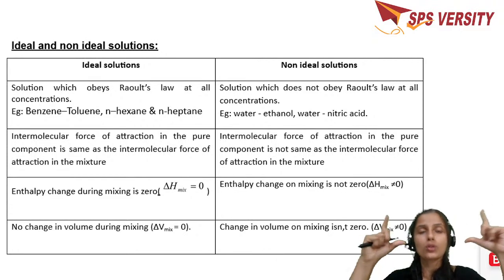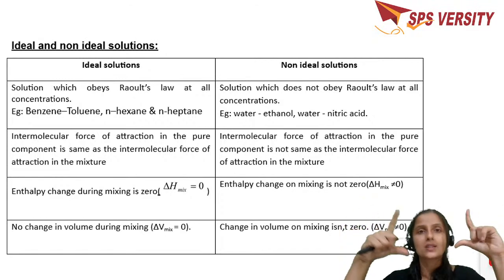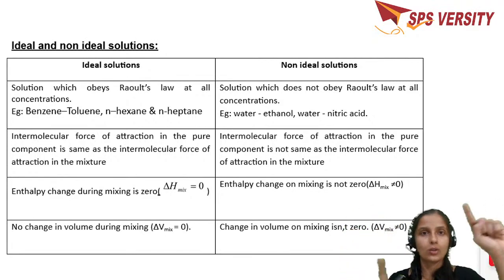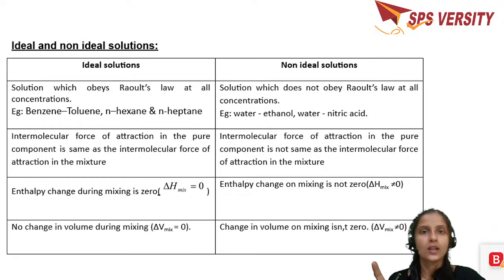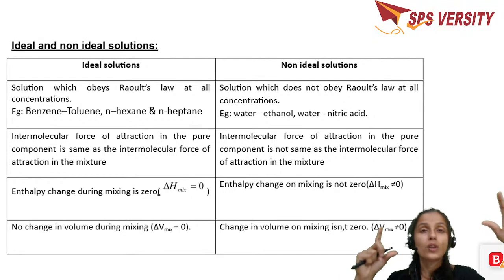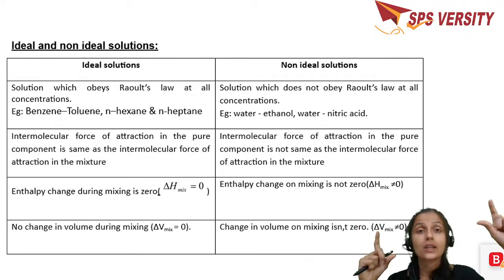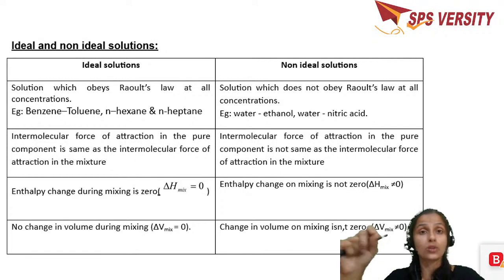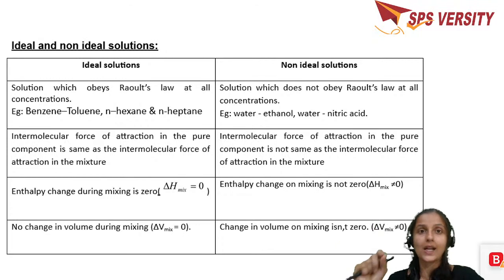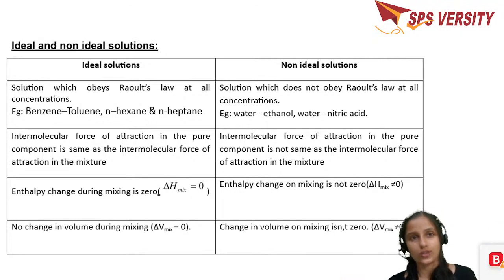Similarly for heat: if you mix two solutions at the same temperature and there is no change in heat, such solutions are called ideal solutions — the mixing is neither endothermic nor exothermic, delta H mixing = 0. In non-ideal solutions, there is a temperature change when mixing: either the temperature increases (exothermic) or decreases (endothermic), so delta H mixing ≠ 0.